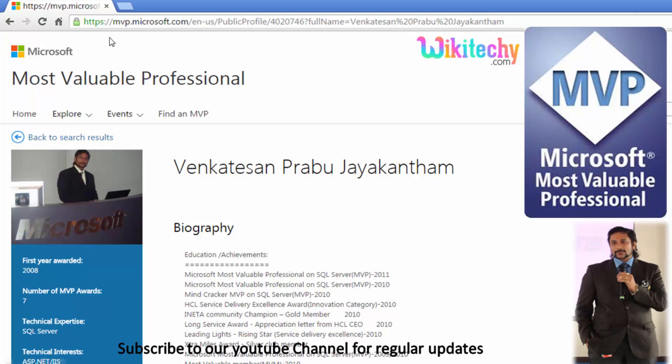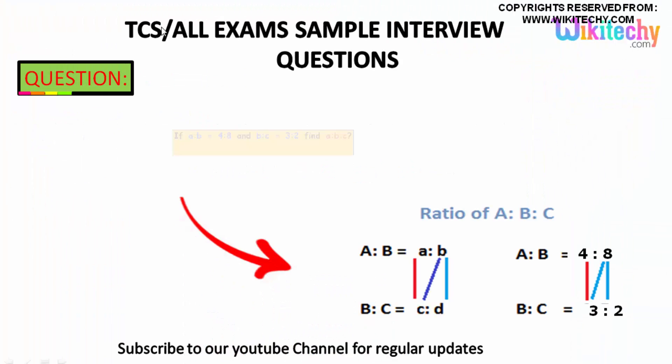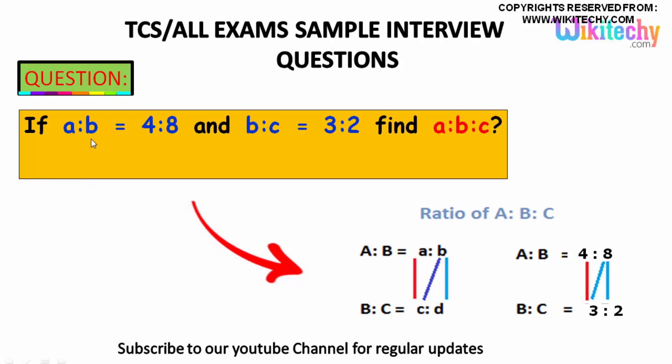Here is my Microsoft URL. If A is to B is equal to 4 is to 8 and B is to C is 3 is to 2, find A is to B is to C. That's the question.